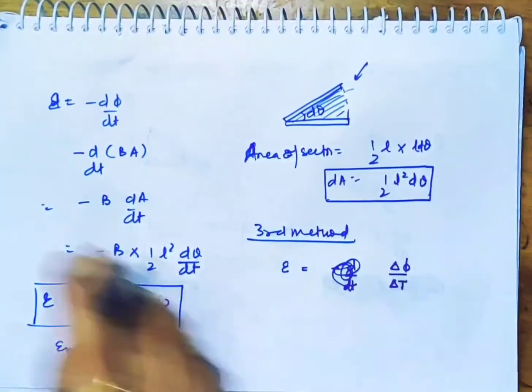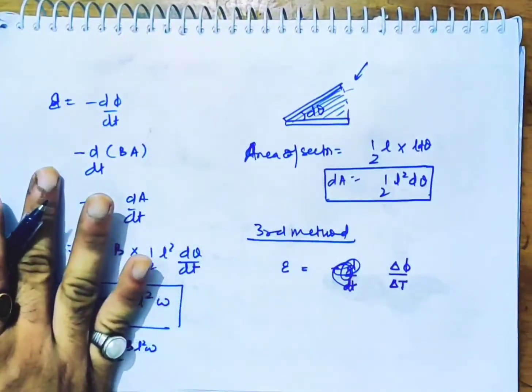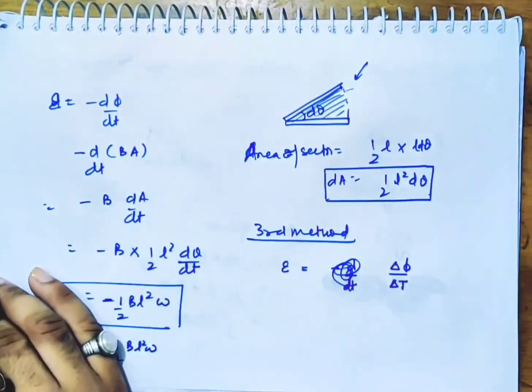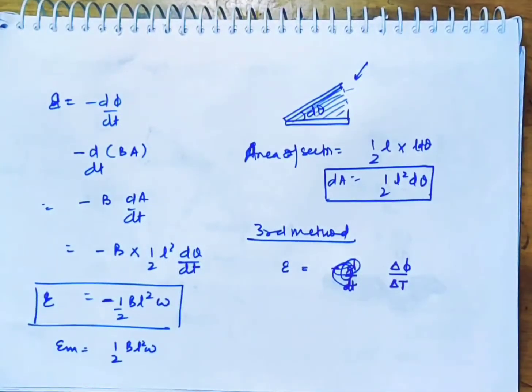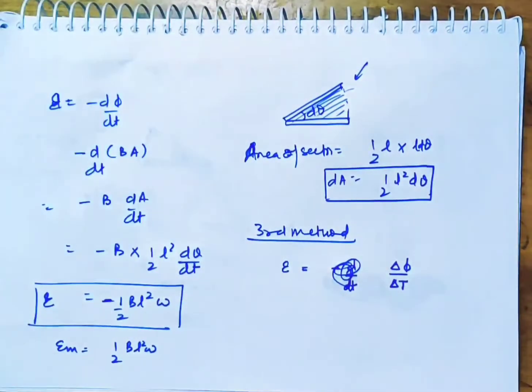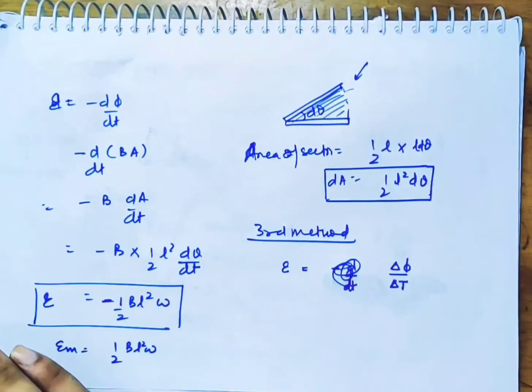EMF - what is it? Delta phi by delta T. I am not writing in the form of d phi by dt because the magnetic field is uniform. If it is uniform, you can take full change.